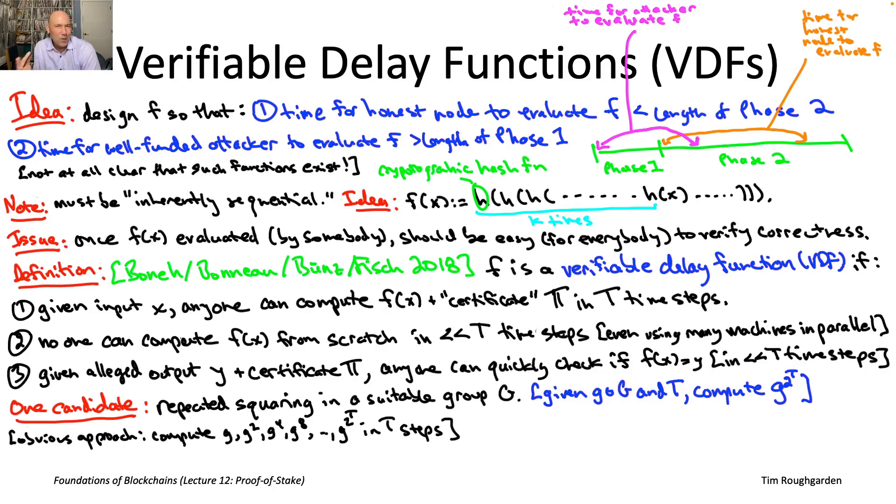But you know, all we need is sort of one group to get a VDF. So the hope would be that there exists groups for which there's no significant shortcut over repeated squaring.